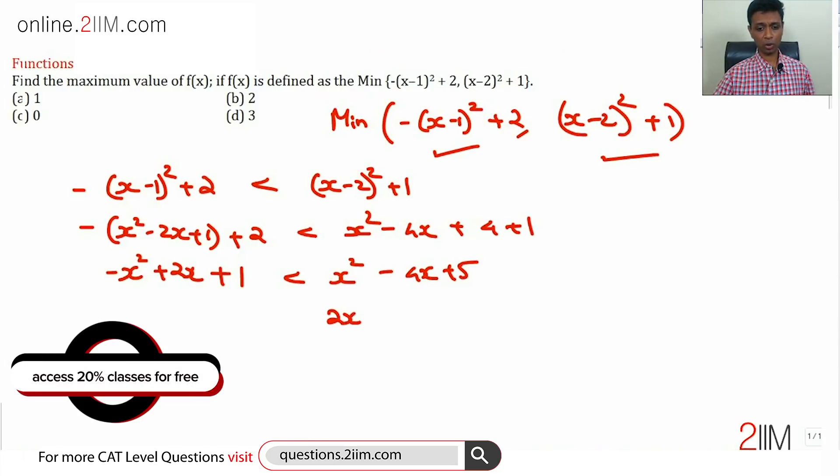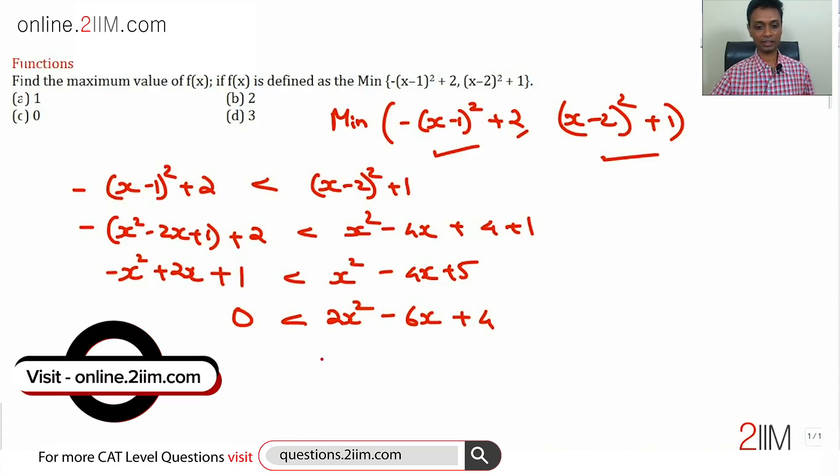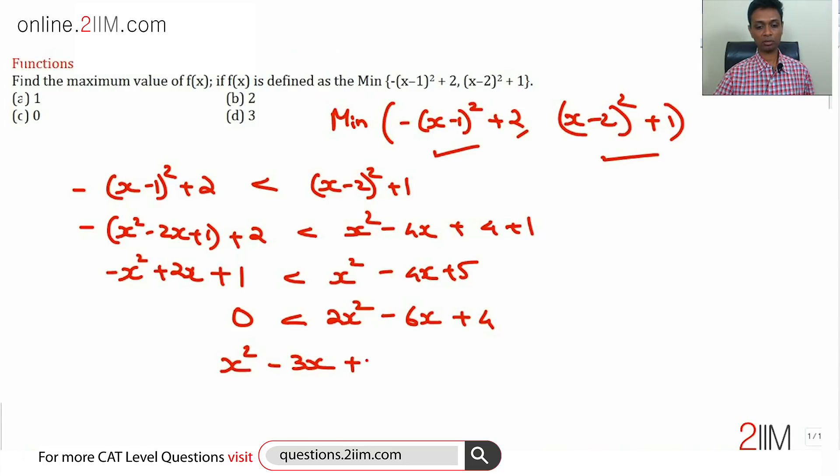Bring everything to one side: 2x² - 6x + 4, or x² - 3x + 2 is greater than 0. Now simplify this: (x-1)(x-2) is greater than 0.